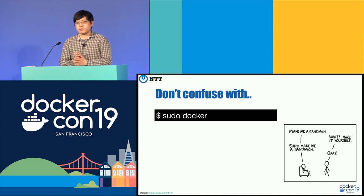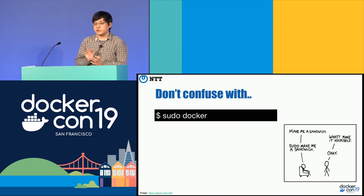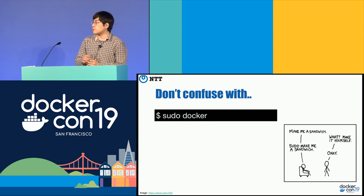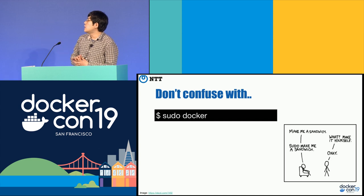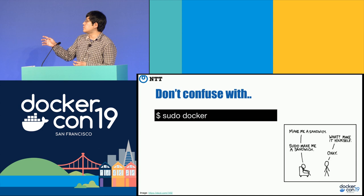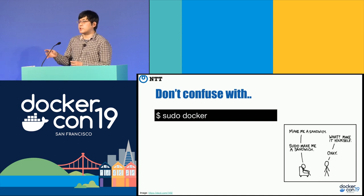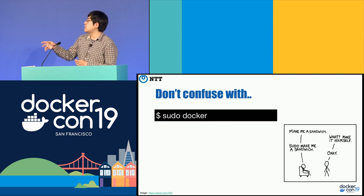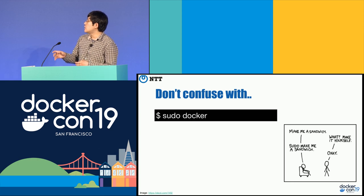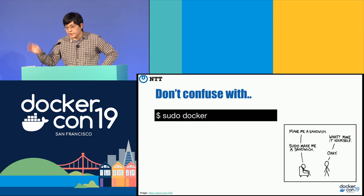When I refer to running Docker as a non-root user, some of you may think of using sudo — so 'sudo docker' — and you can execute the Docker client as an unprivileged user. But actually, this runs everything as root. The Docker daemon is running as root, and actually the client is also running as root. So you feel you are running Docker as an unprivileged user, but this is not safe at all.